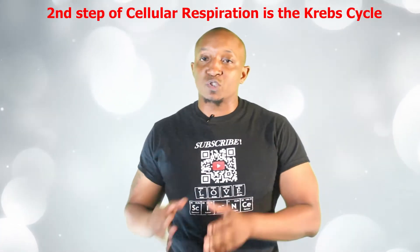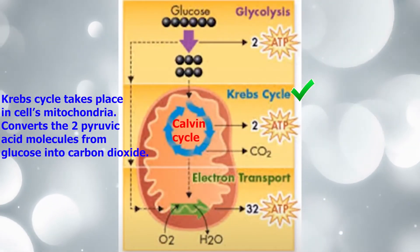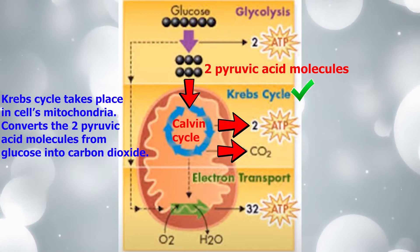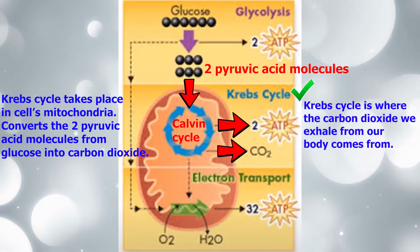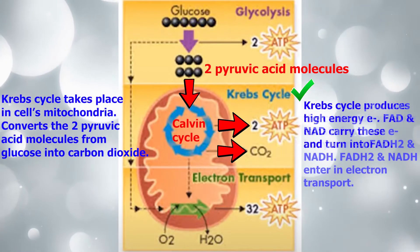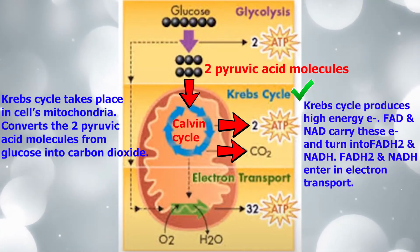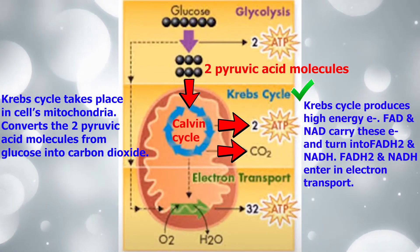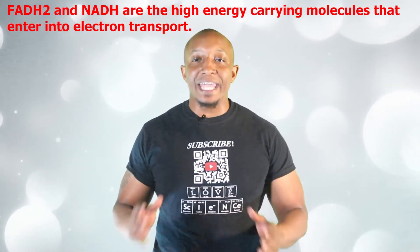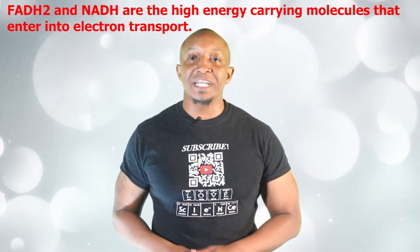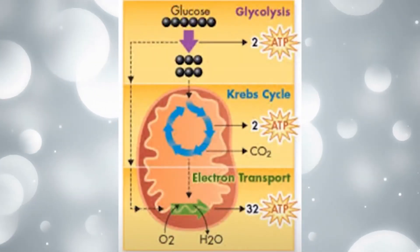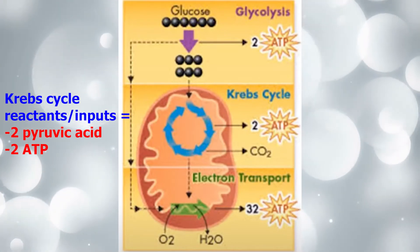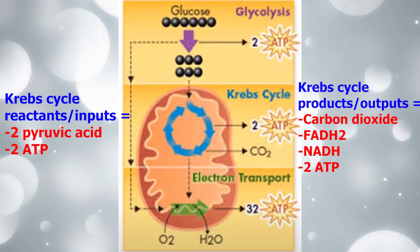Our second stage of cellular respiration is the Krebs cycle, and it takes place in a cell's mitochondria. The Krebs cycle takes the two pyruvic acid molecules produced in glycolysis and converts them into carbon dioxide. One ATP molecule comes from each pyruvic acid when they are converted. The Krebs cycle is where the carbon dioxide we exhale from our bodies comes from. The Krebs cycle also produces high energy electrons. Hydrogen atoms transfer these electrons to two carrier molecules — FAD and NAD — which transform them into FADH2 and NADH. FADH2 and NADH are the energy-carrying molecules that enter the next stage: electron transport. The two reactants of the Krebs cycle are two pyruvic acid molecules and two ATP, and the four products are carbon dioxide, FADH2, NADH, and two ATP.